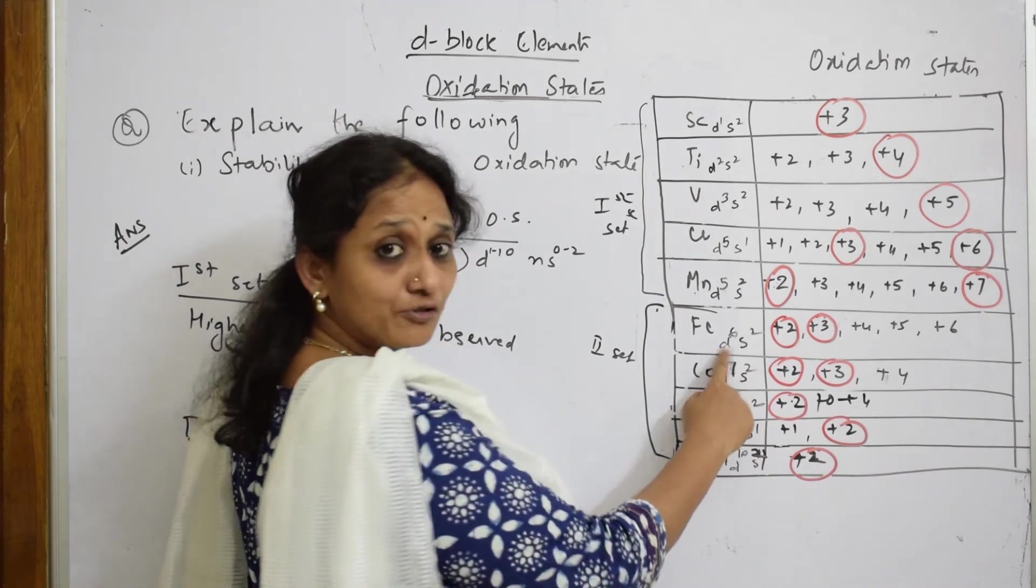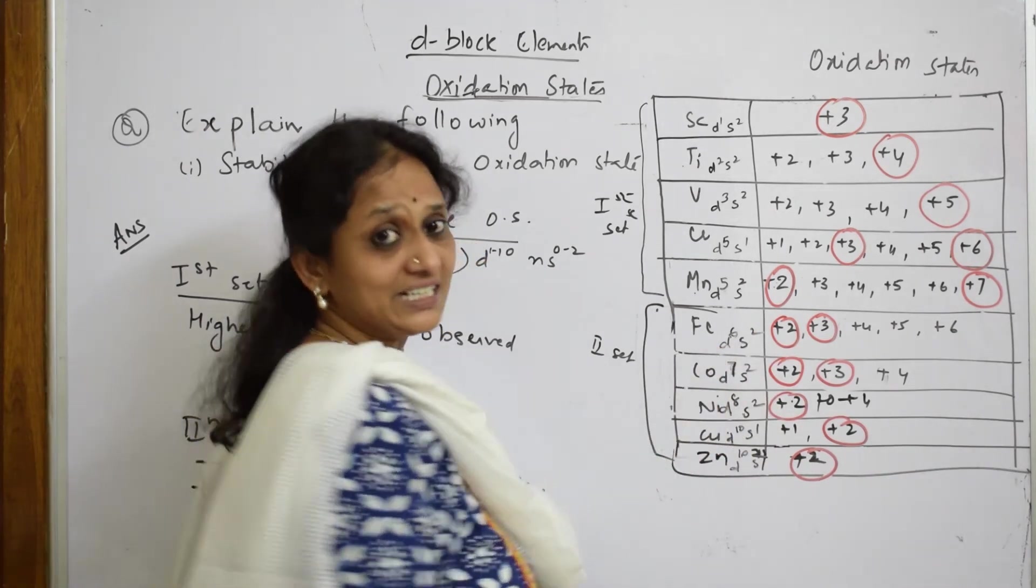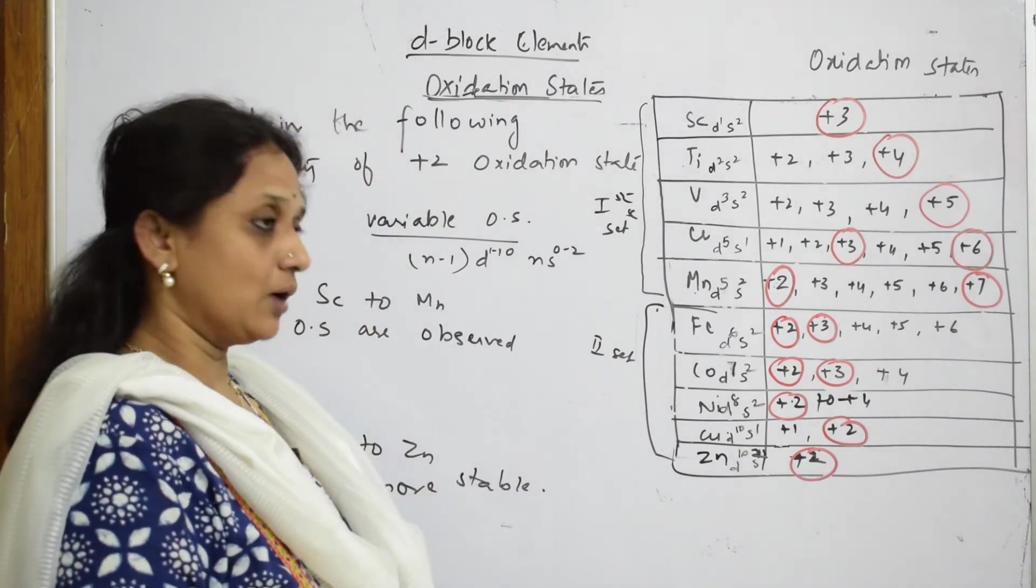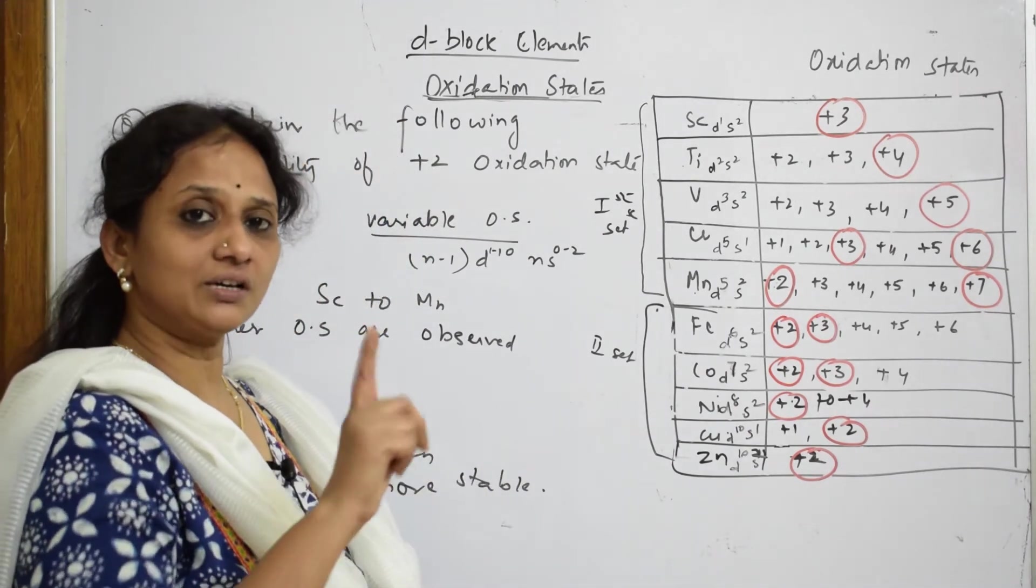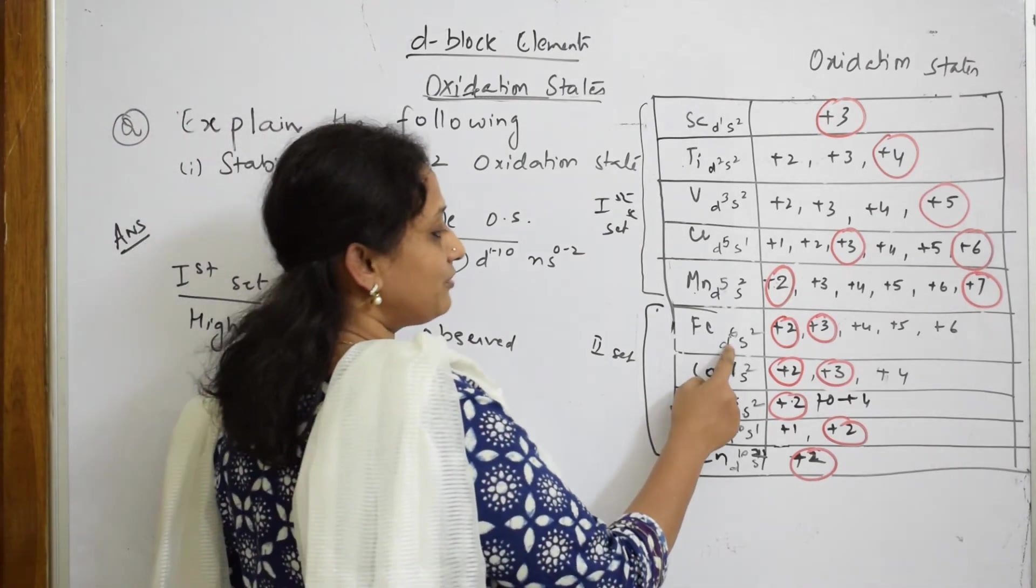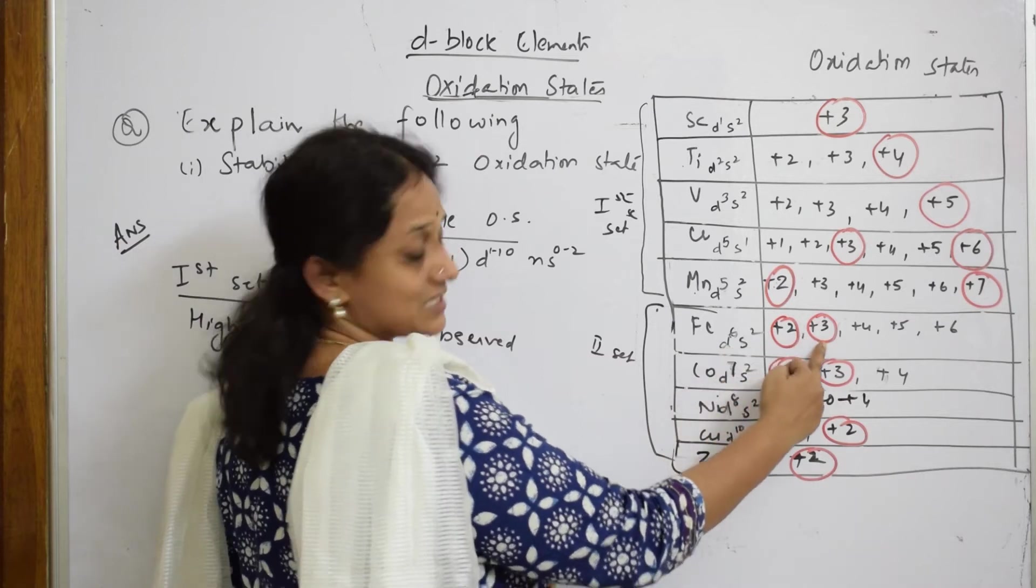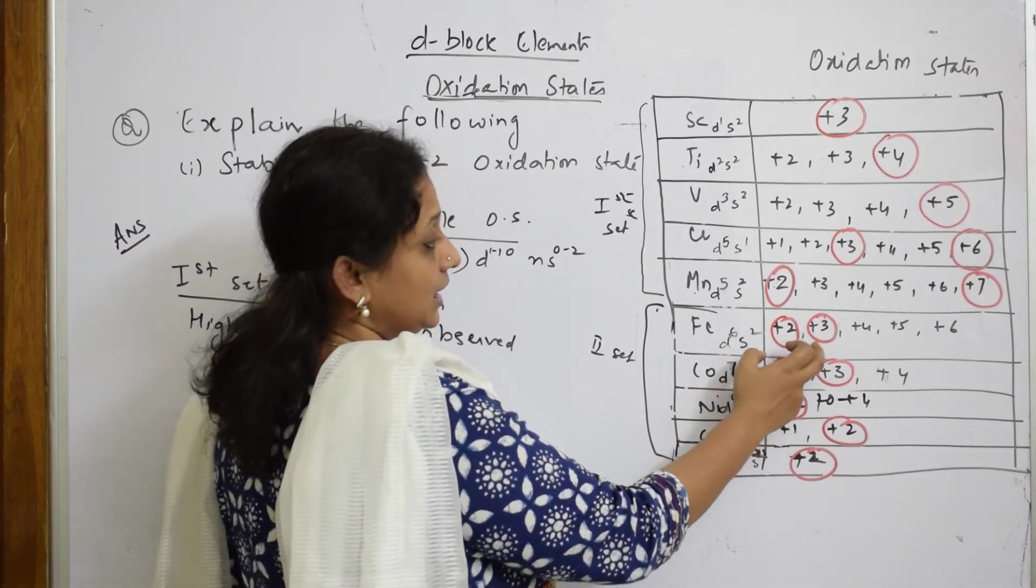So now why, what is the reason? Suppose if I take iron, this is 3d6 4s2. If I take out two electrons, it is left with 3d6. That 3d6 electron configuration is unpaired, I accept that.